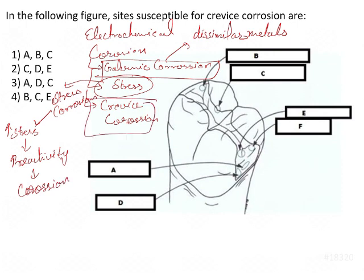Then we have the crevice corrosion. Now the corrosion that occurs in cracks, that occurs in crevices due to accumulation of plaque. So the corrosion that occurs in crevices due to accumulation of plaque, and due to accumulation of plaque there will be a decrease in pH, acidic environment, and that will lead to a kind of corrosion that is known as the crevice corrosion.